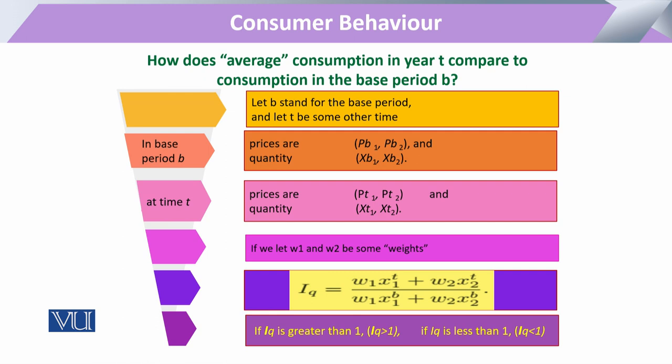If we look at two different time periods — we look at the base period, which has a notation B, and in this base period, the basket of commodities or goods has two commodities: x1 and x2. The base period prices are denoted as pb1 and pb2, and similarly the base period quantities are xb1 and xb2.